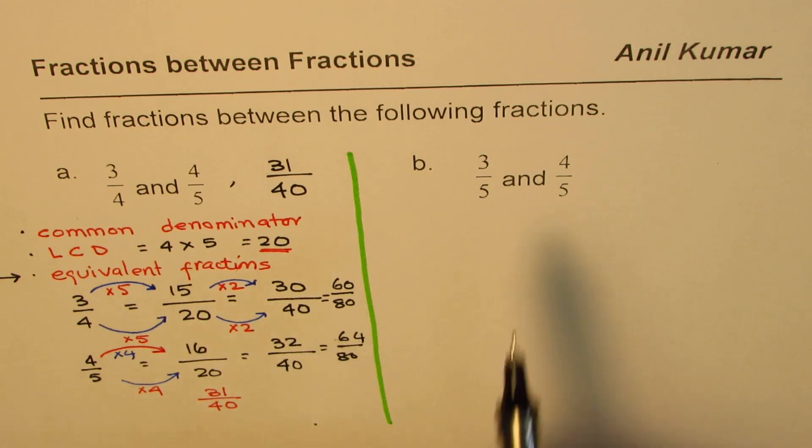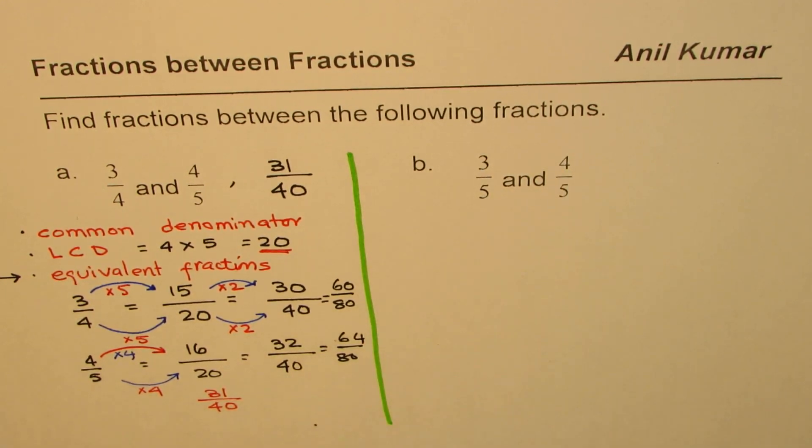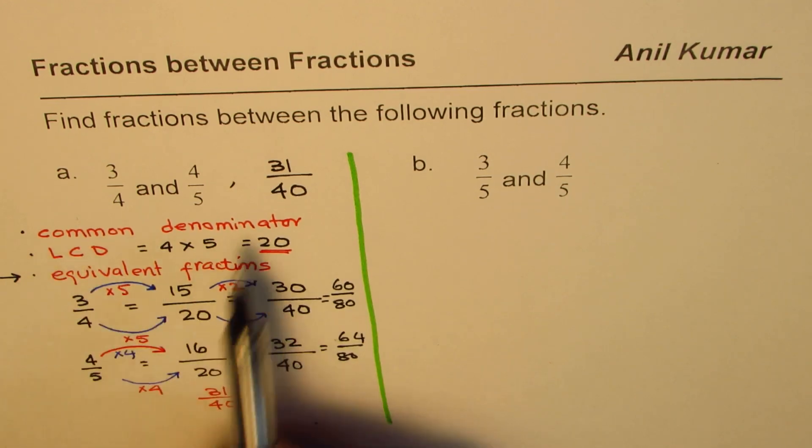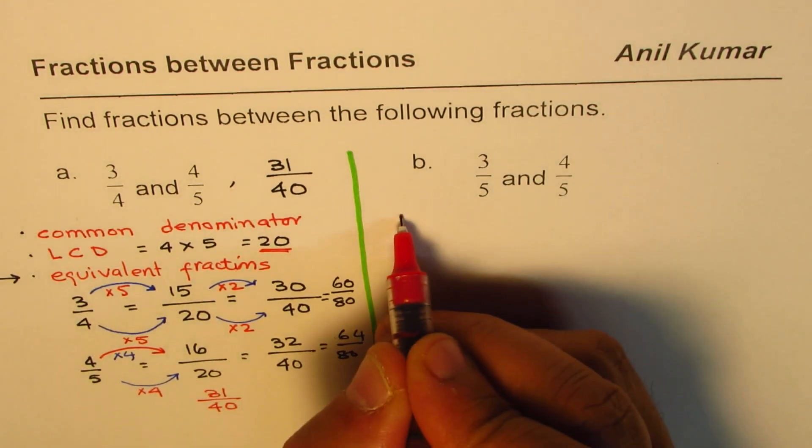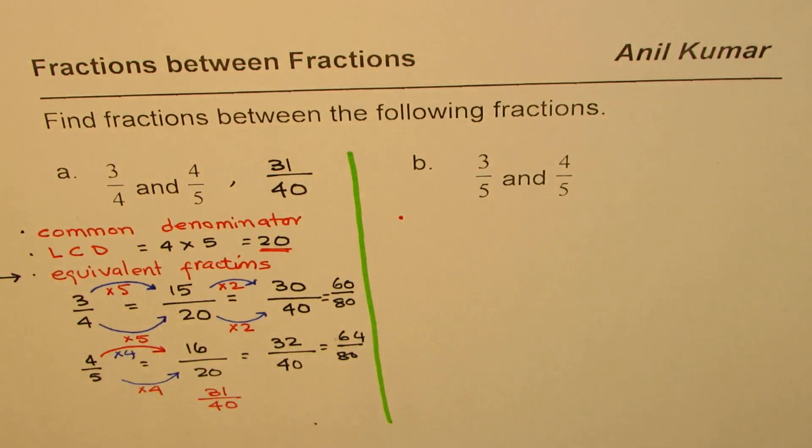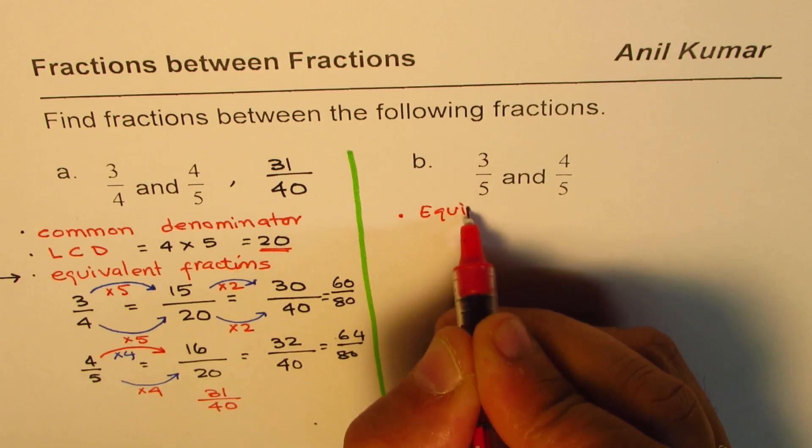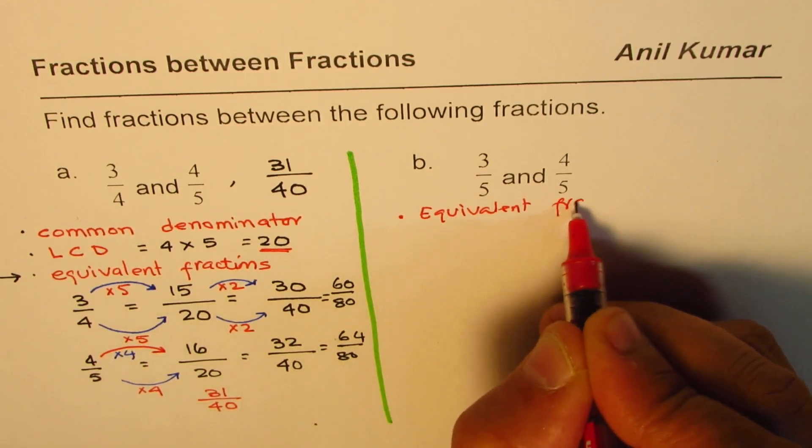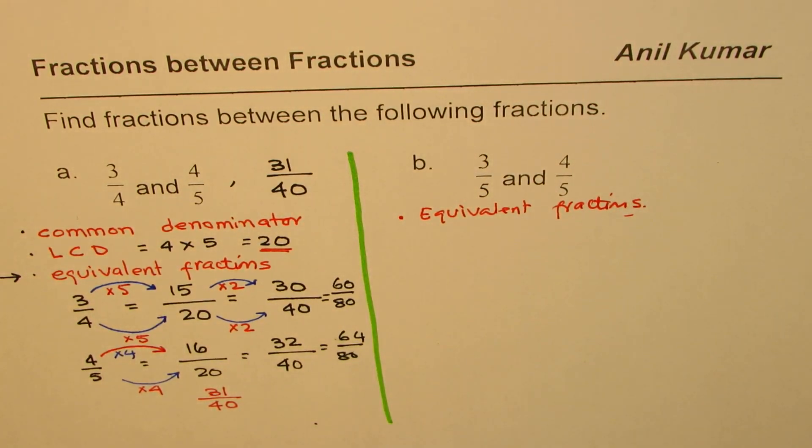Now let us practice this with a different kind. Part B here is we need to find fractions between 3 over 5 and 4 over 5. Well, common denominator is already given to us. Then what should we do? Since we have the common denominator, our step is to find equivalent fractions.